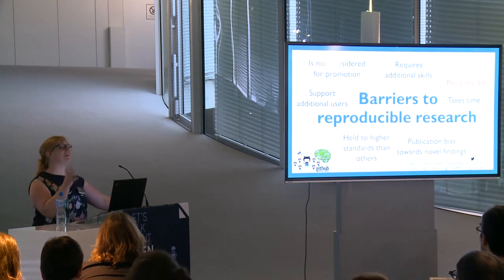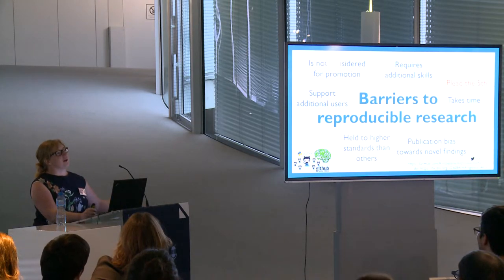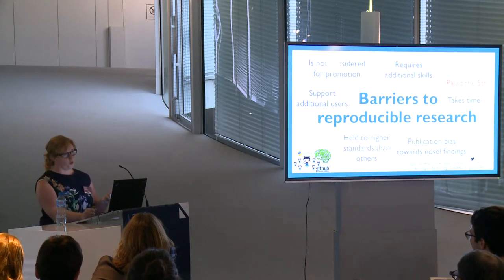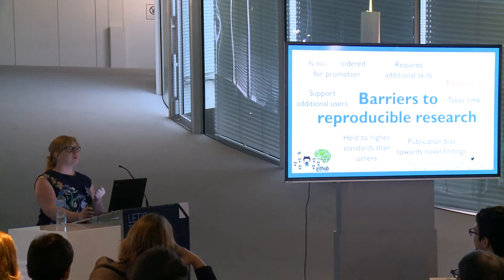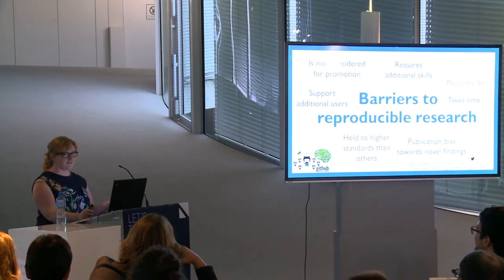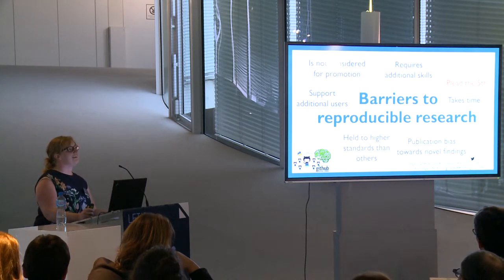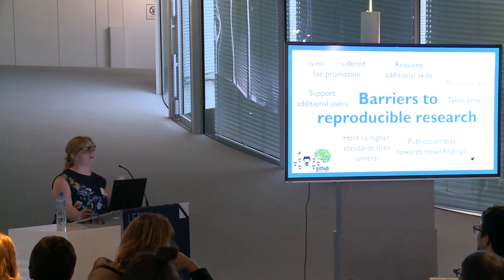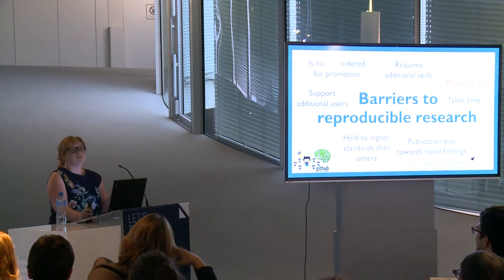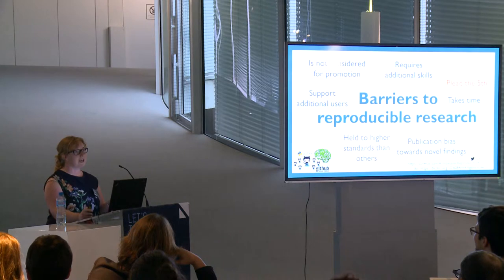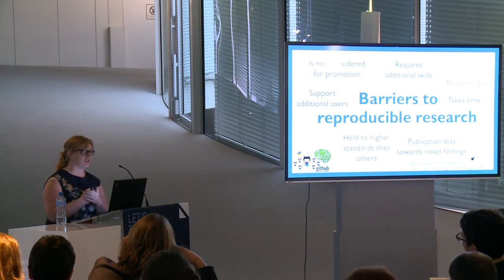Another barrier is 'pleading the fifth' — an Americanism referring to not being compelled to give evidence against yourself. I hear people say they don't want to do reproducible research because you might find out they made a mistake. That makes me roll my eyes. More generously, it's back to the incentive structure problem — it's no longer okay to say 'I did good work but I'm human and I made a mistake.' Once a paper is published it's treated as gospel. That's rubbish.